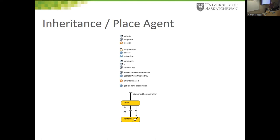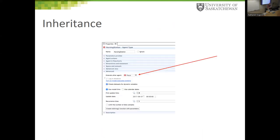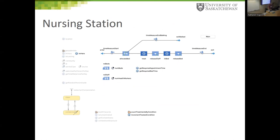The Place agent has features shared by all places: a latitude and longitude, people inside it, some parameters describing it, and a state of being clean or contaminated as a reservoir for a pathogen. In AnyLogic you can set up inheritance, so the Nursing Station agent — being a kind of Place — inherits all those shared features, shown as grayed-out properties.